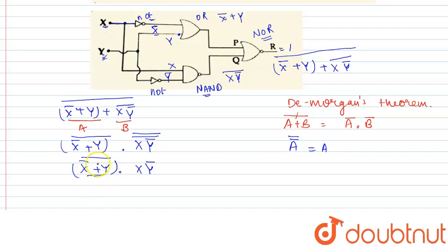So we will get (x̄ + y)·x·ȳ. Again, this can also be reduced with the help of De Morgan's theorem by cut the line, change the sign. So this will become x̄̄·ȳ.